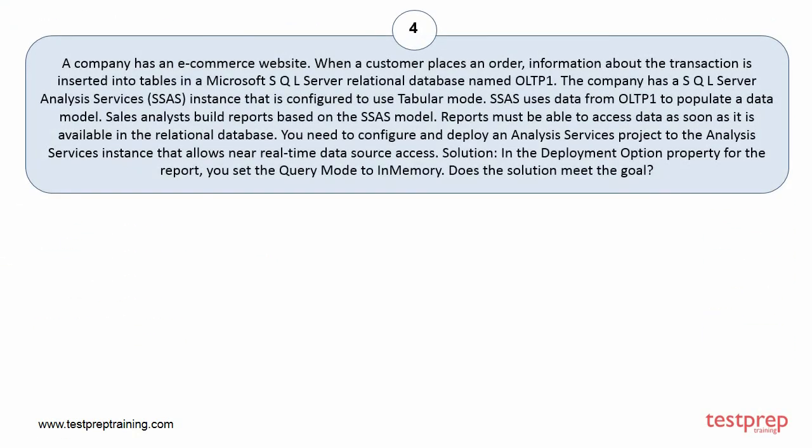Question number 4. A company has an e-commerce website. When a customer places an order, information about the transaction is inserted into tables in a Microsoft SQL Server relational database named OLTP1. The company has a SQL Server Analysis Services instance that is configured to use tabular mode. SSAS uses data from OLTP1 to populate a data model. Sales analysts build reports based on the SSAS model. Reports must be able to access data as soon as it is available in the relational database. You need to configure and deploy an Analysis Services project to the Analysis Services instance that allows near-real-time data source access.